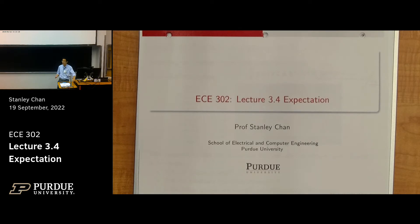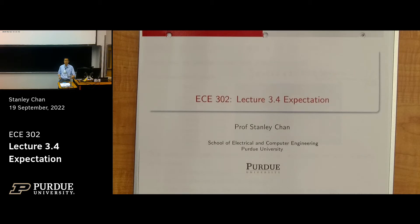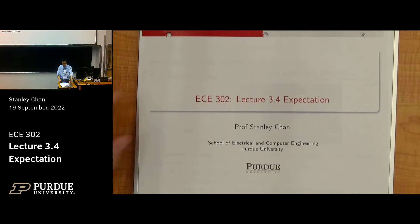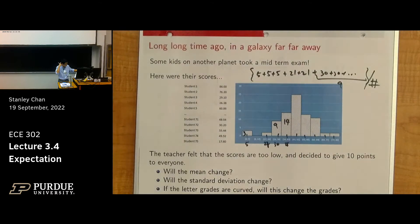What is expectation? Expectation is the average of that probability mass function. If I give you the histogram, I calculate the average — that's called the empirical average. Now if I give you the probability mass function, which is the limiting thing, you're going to get expectation. Today I want to talk about a few examples of how to calculate expectation and then some mathematical properties of expectation.